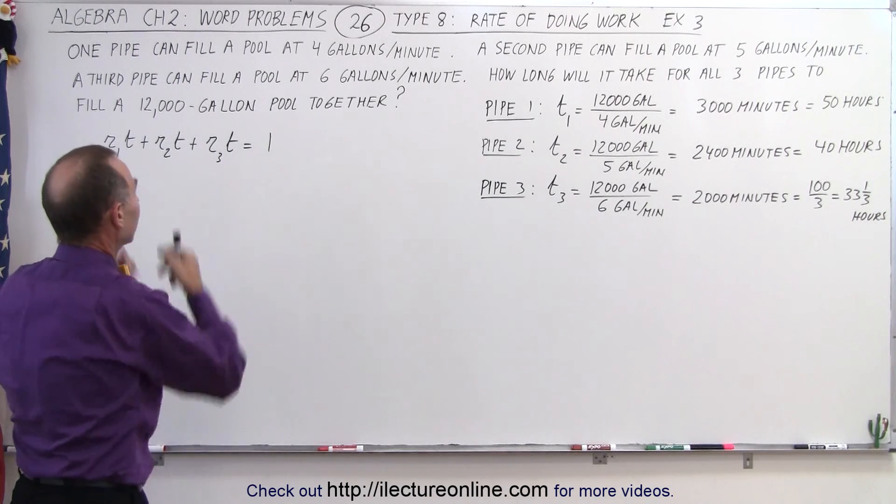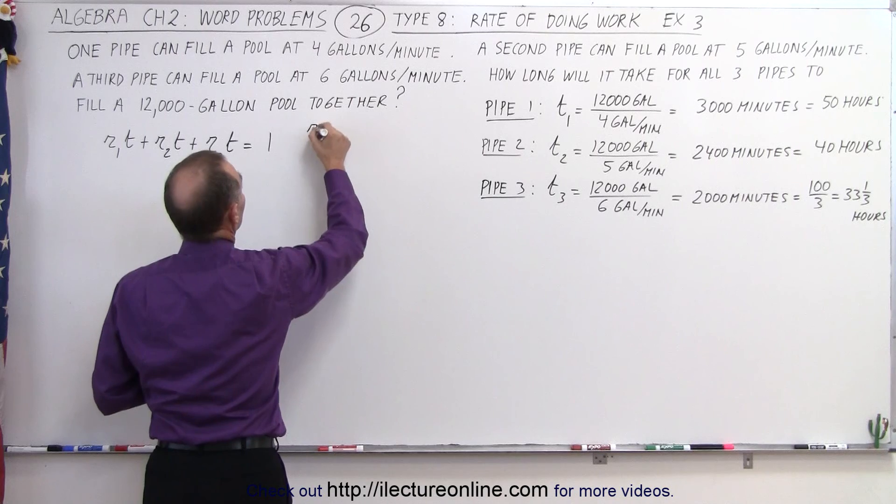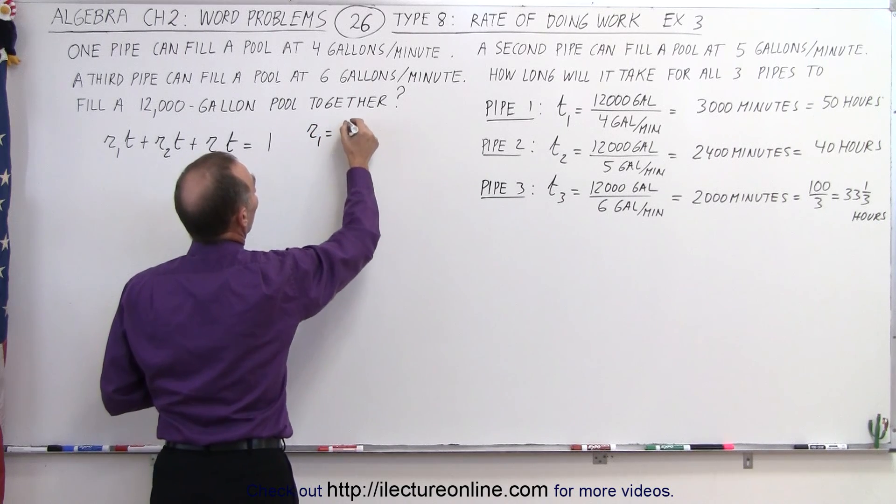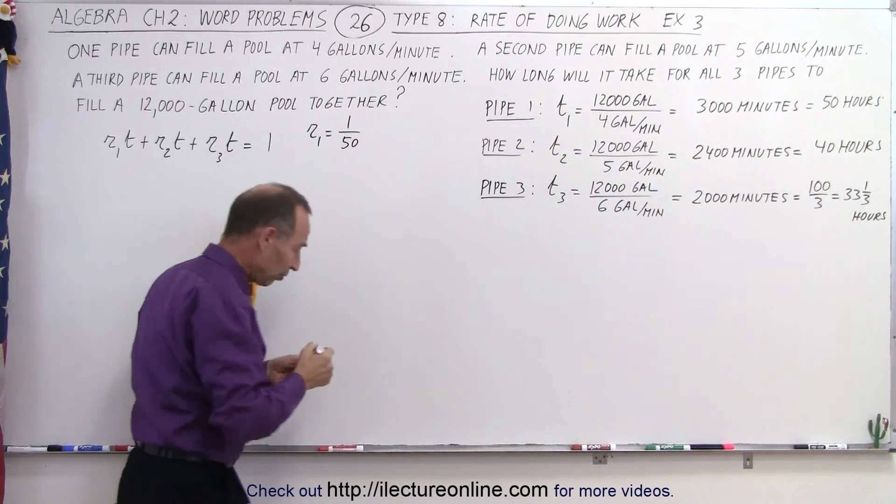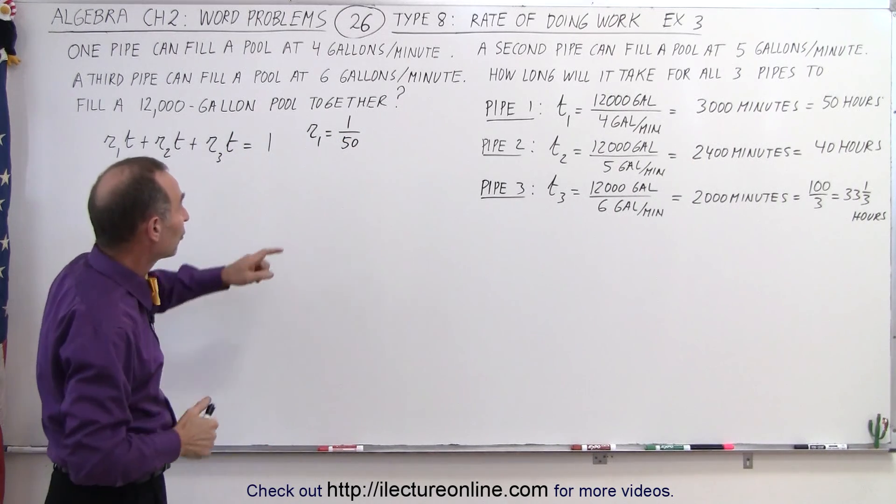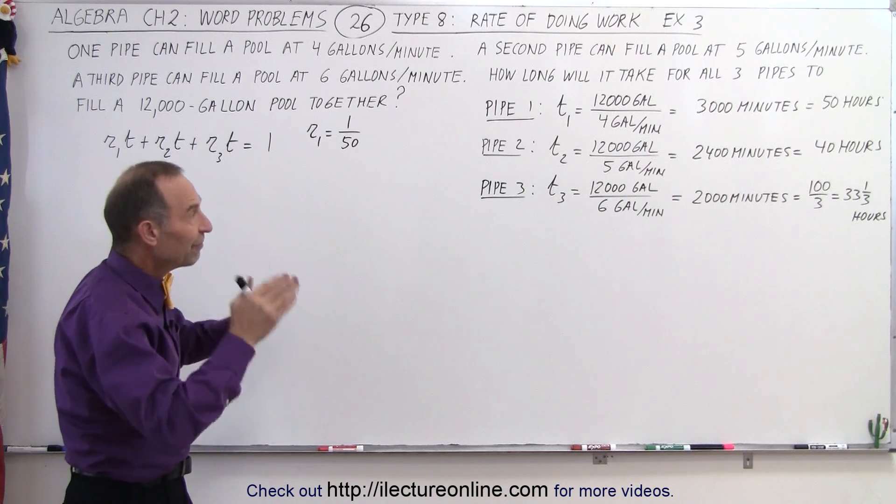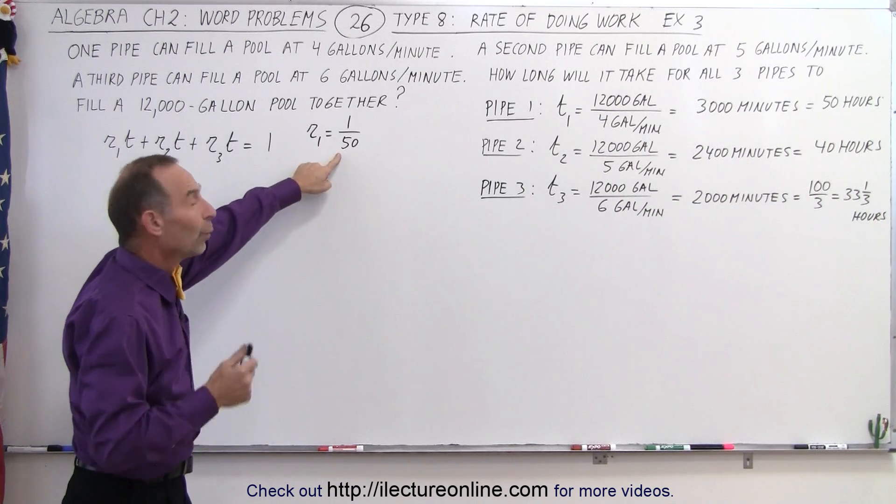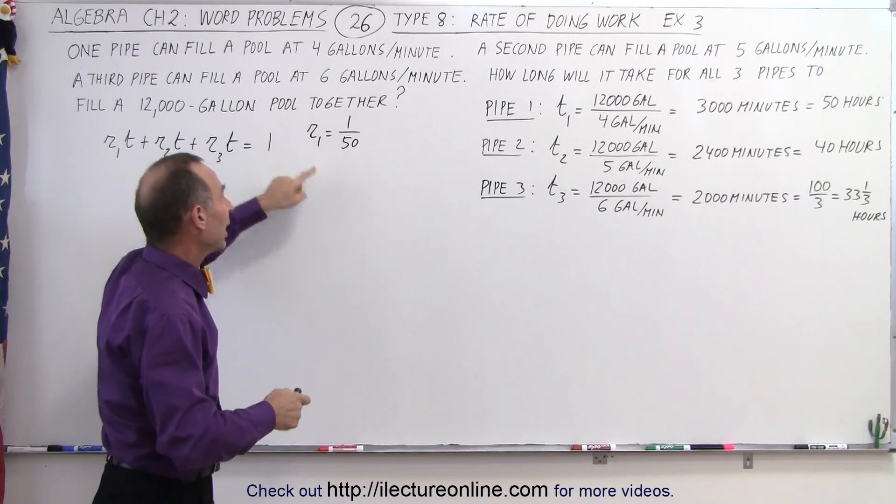Now we're ready to plug that into the equation, because remember, the rate would be equal to 1 over the number of hours that it takes to fill the whole pool. In other words, since pipe 1 could fill the whole pool in 50 hours, then it can fill 1/50th of a pool in 1 hour. So that would be rate 1.